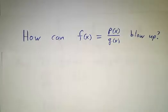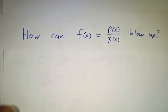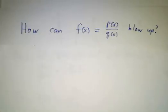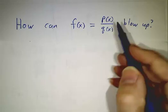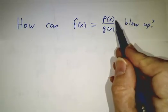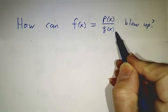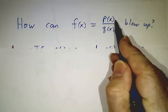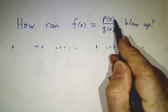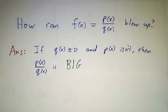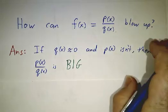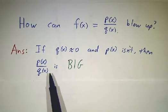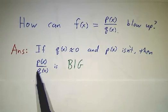So how can a ratio blow up? Remember, a vertical asymptote is where the limit is infinity or minus infinity. So for a ratio to blow up, either the numerator has to blow up or the denominator has to go to zero. And if these are polynomials, the numerator is never going to blow up. Polynomials are nice and well behaved.